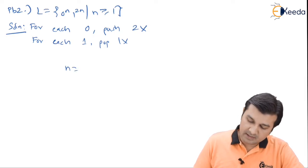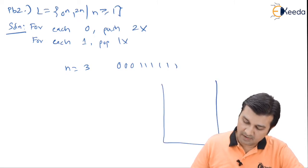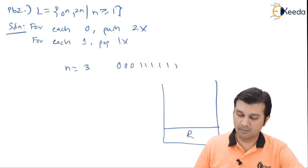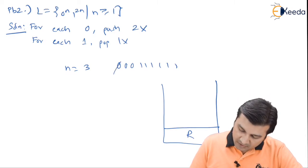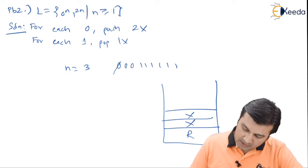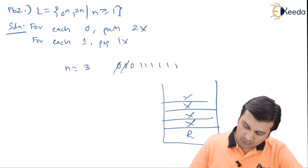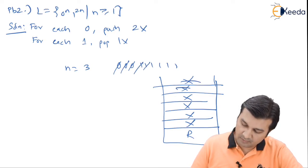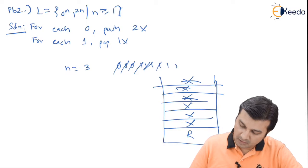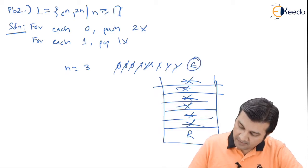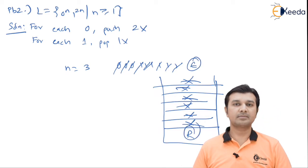Since it is of the form 0 raised to n, 1 raised to 2n, let us consider n equals 3. That gives me 000 and 3 times 2 is 6 ones: 111111. I have a stack which has R at the bottom. For first 0, push 2x on the stack. For second 0, push 2x. For third 0, push 2x. For first 1, pop 1x. Second 1, pop x. Third, fourth, fifth, sixth ones pop x each. After that, if it is epsilon and R, I say it will accept it.